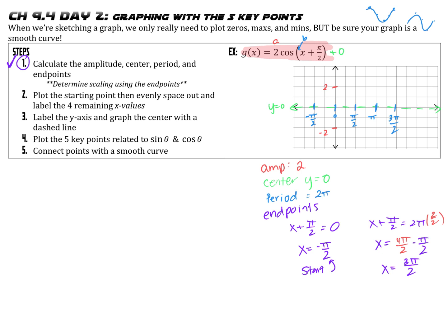I want to make sure I don't have any reflections happening, because that changes how my graph starts. Looking at this cosine function, I'm stretching it but not reflecting it. The regular cosine function starts up high and goes down and loops back around. So my starting point at negative pi over 2 is going to be at positive 2. Cosine always starts up, then goes down to the minimum, back up to the center, and up to the maximum again. I now have my 5 points and I'm going to connect them with a smooth curve — it should look like a valley, not a V.